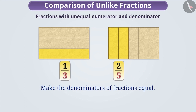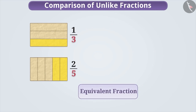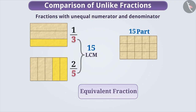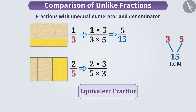In such situations, we need to make the denominator equal in both fractions by finding their common denominator. Since the denominator of each fraction represents the total equal parts of a whole, making the denominators of the two fractions equal means making their total number of parts equal. To do this, we will find the equivalent fraction with the same denominators for both fractions by finding the LCM of the denominators. Since the LCM of 3 and 5 is 15, we need to make 15 equal parts of each paper. We will multiply the numerator and denominator of 1 by 3 by 5 to get the fraction 5 by 15. Similarly, the fraction 2 by 5 is multiplied by 3 to get 6 by 15.